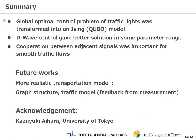In summary, we formulated the global optimal control problem of traffic lights in terms of the Ising model or QUBO model. The result of solving the problem using the D-Wave machine was better than other existing methods in some parameter range. We also analyzed the correlation of traffic lights and clarified that cooperation between neighboring signals is very important. One of our future plans is to extend the method to a more realistic configuration of cities. This work was done in collaboration with Professor Aihara of the University of Tokyo. Thank you very much for your kind attention.